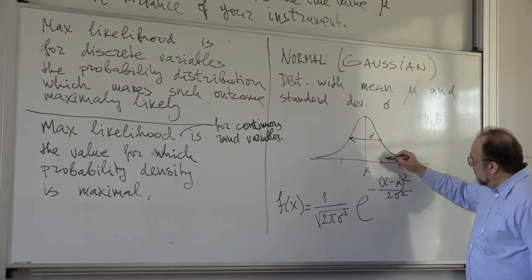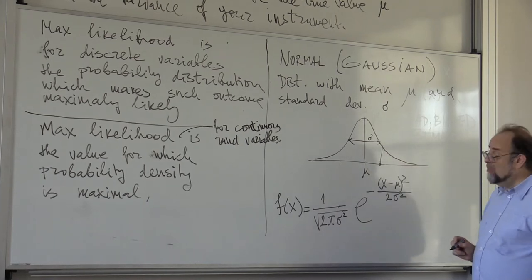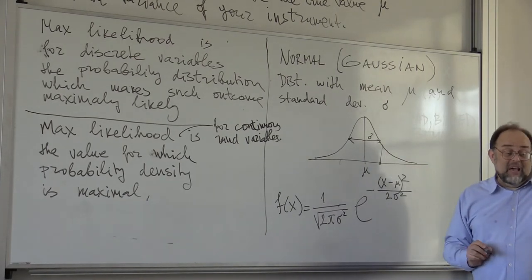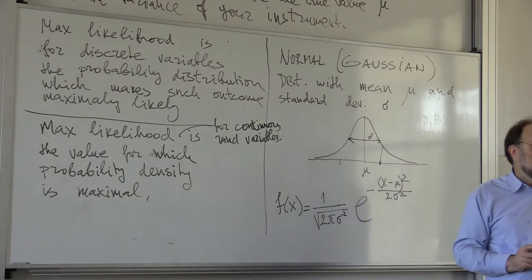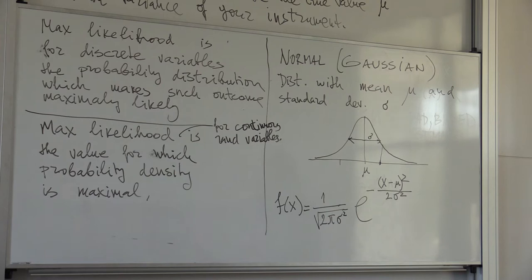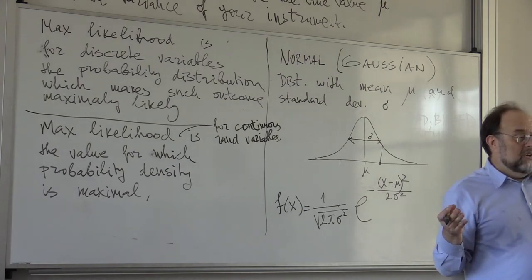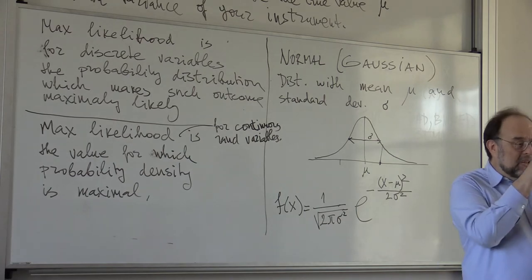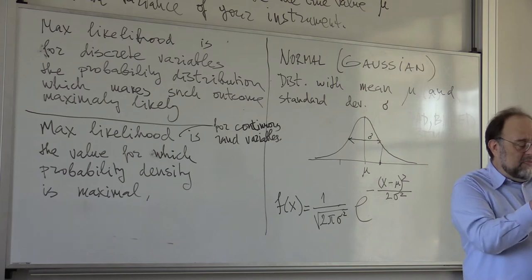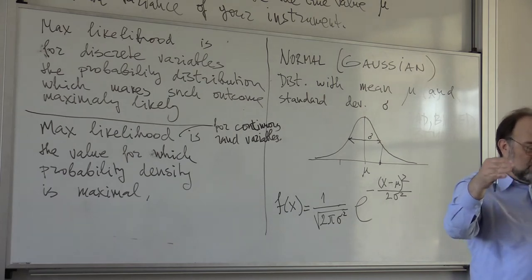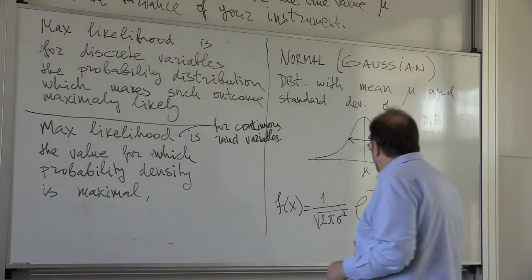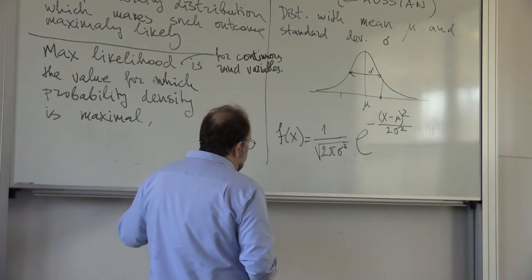The probability density — because any particular number for continuous random variables has probability 0. If you throw randomly on the interval 0 to 1, then the probability of any particular real number is 0. But the probability of a certain interval is the size of that interval compared to the whole interval. So this is the probability density.